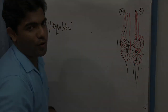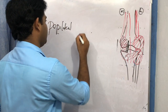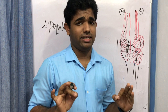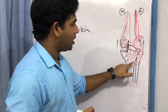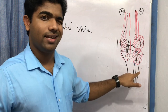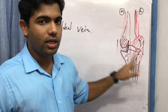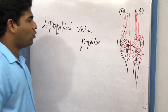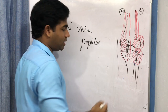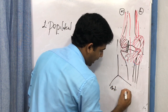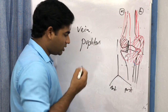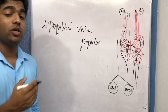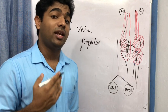Now the popliteal vein. It is straightforward — it starts at the lower border of the popliteus muscle, where the popliteal artery ends and divides into anterior and posterior tibial arteries. The popliteal vein originates from the veins accompanying those anterior and posterior tibial arteries.